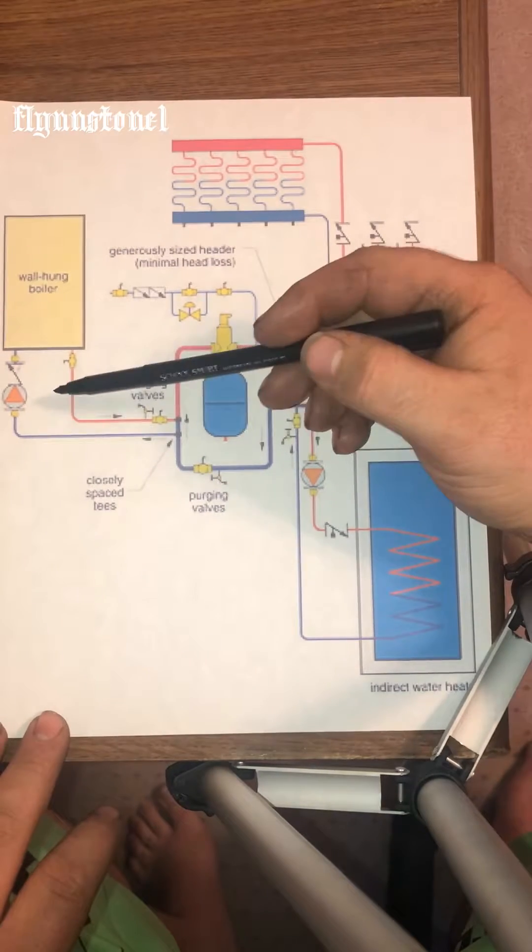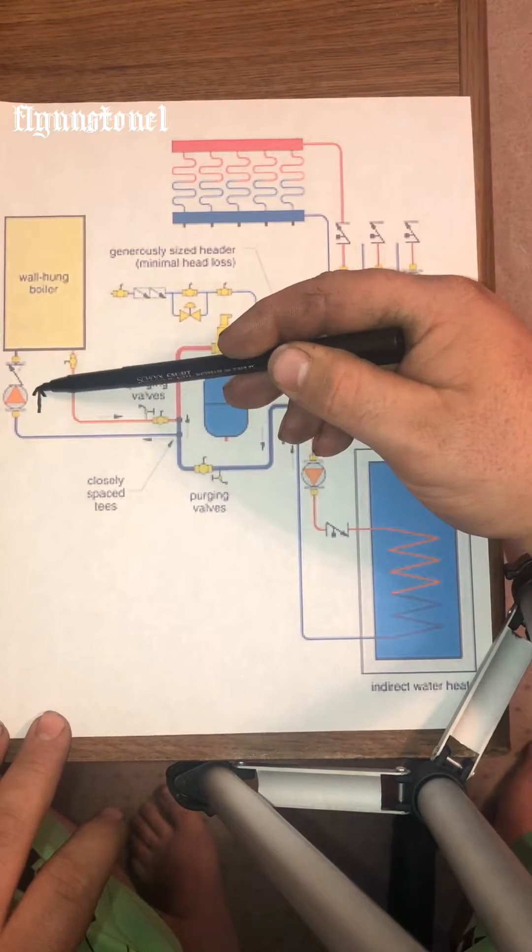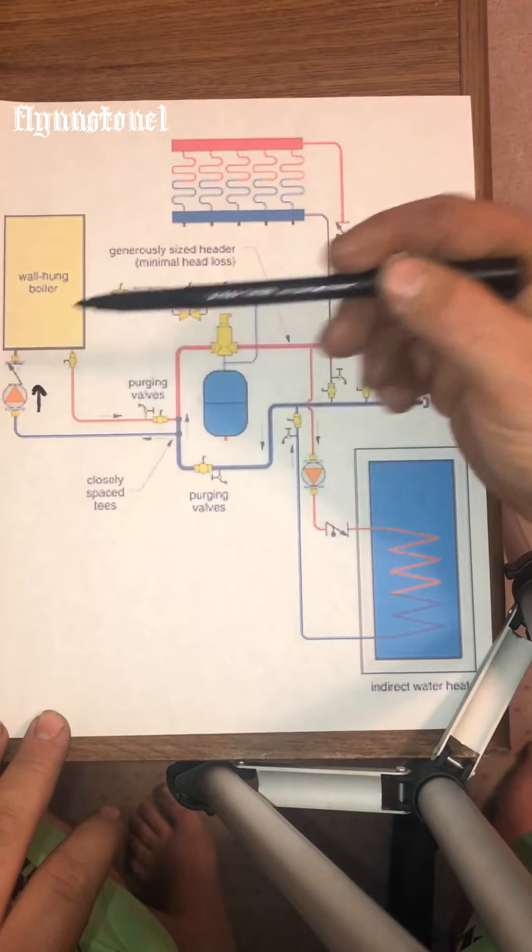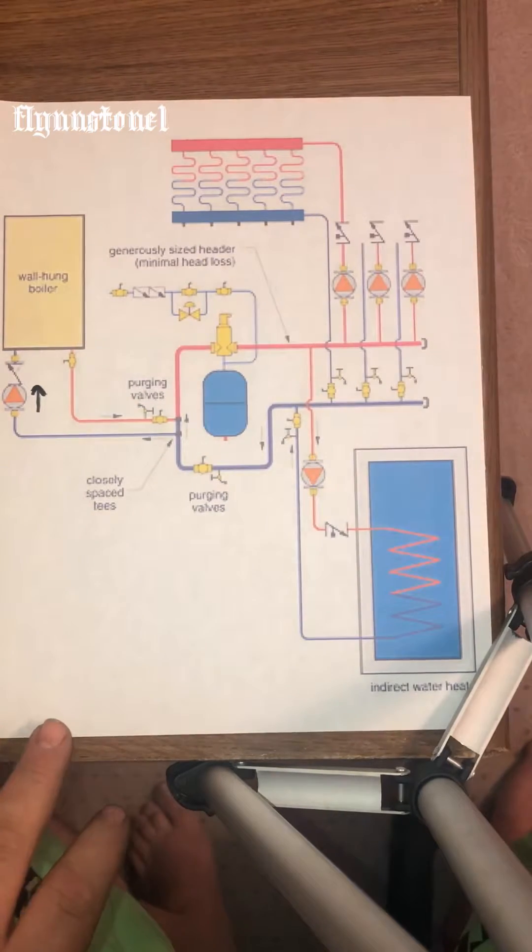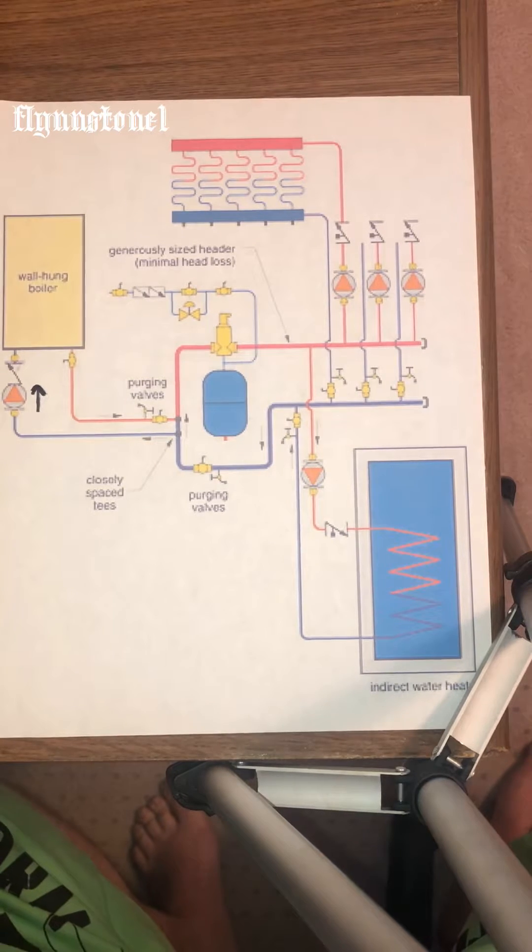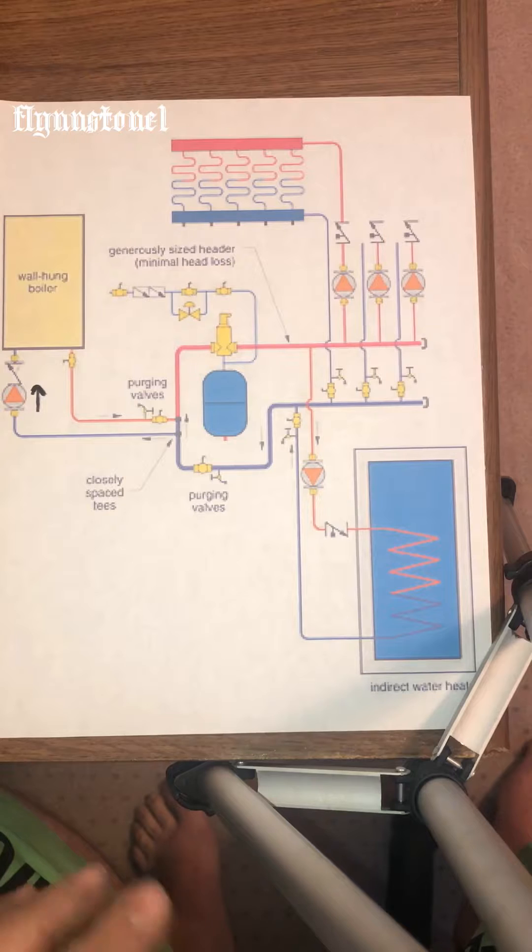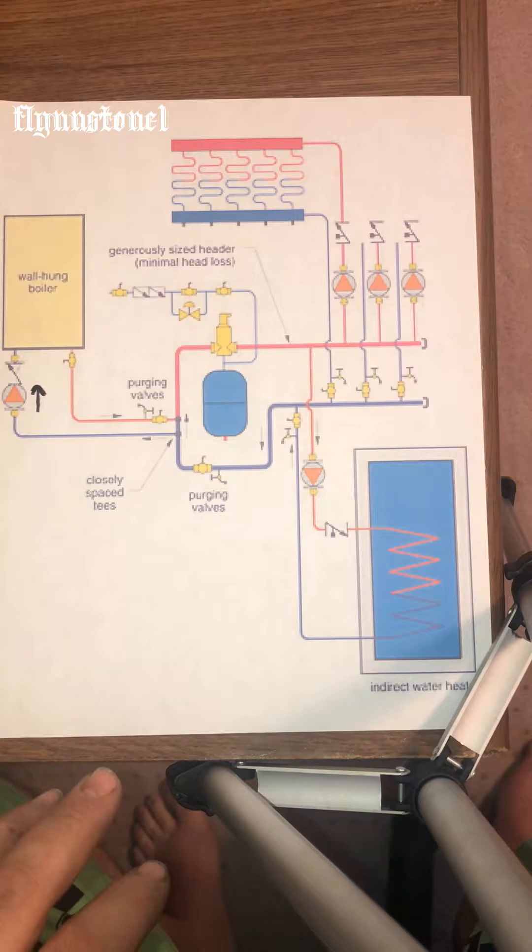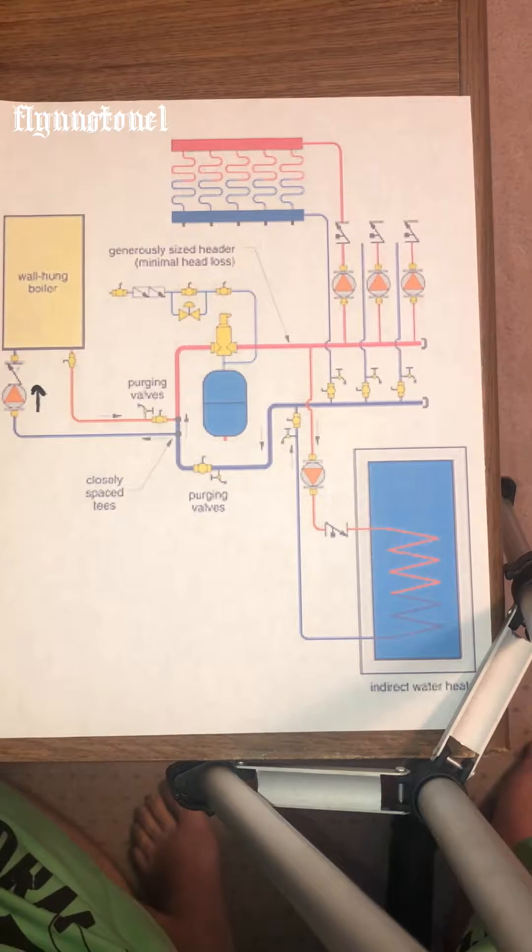You have your circulator on your return side pumping into the boiler. Some boilers have the circulator built into the unit and all combis have the circulator built into the unit.